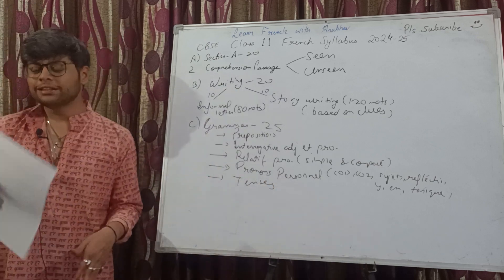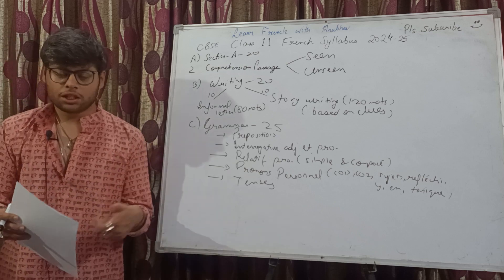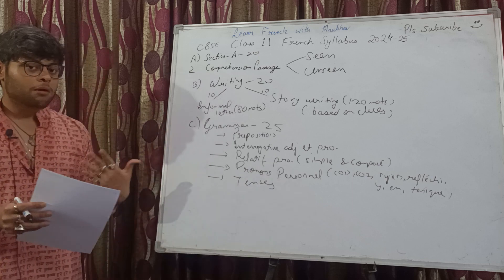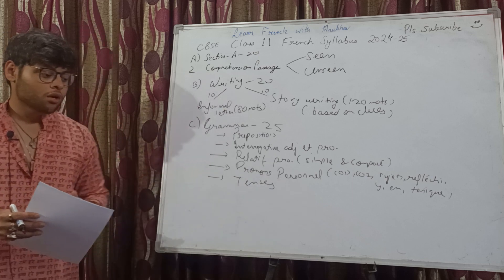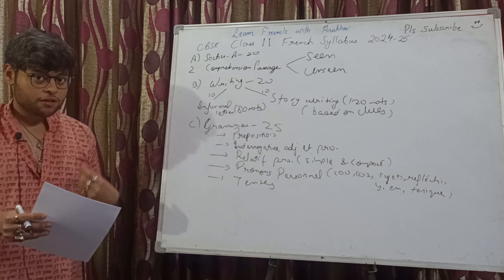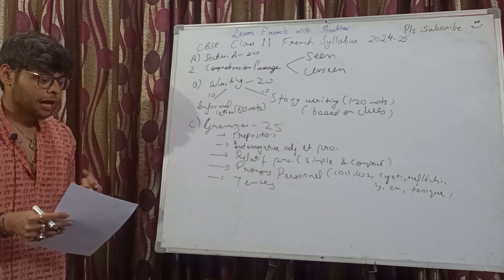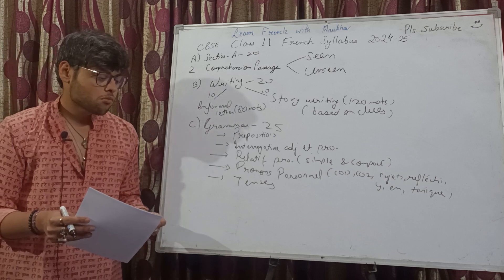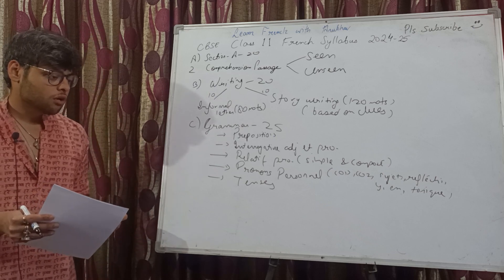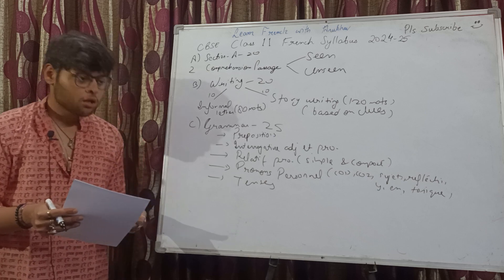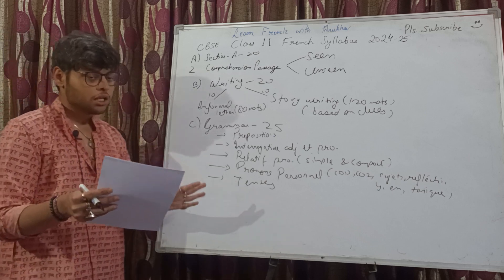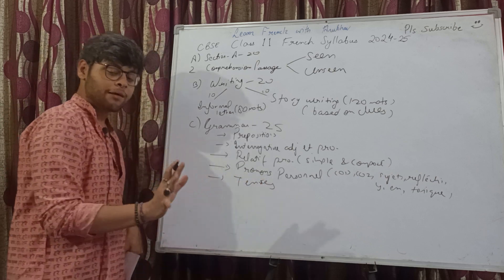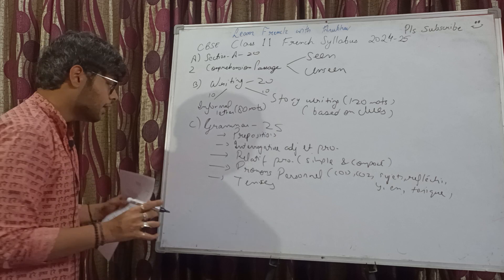Lastly, we have tenses — excluding Passé Simple and Passé Antérieur. This means all the tenses done up to Class 10th: present tense, futur proche, futur simple, futur antérieur, imparfait, passé composé, impératif, subjonctif, and infinitive — roughly eleven to thirteen tenses in total. You need to do all tenses except Passé Simple and Passé Antérieur.